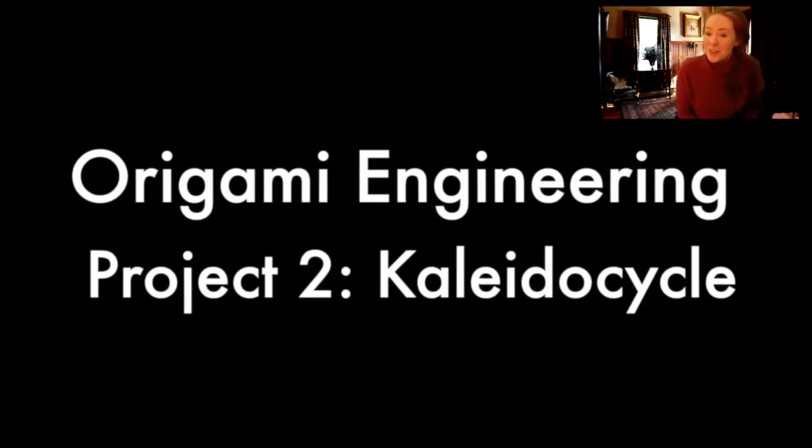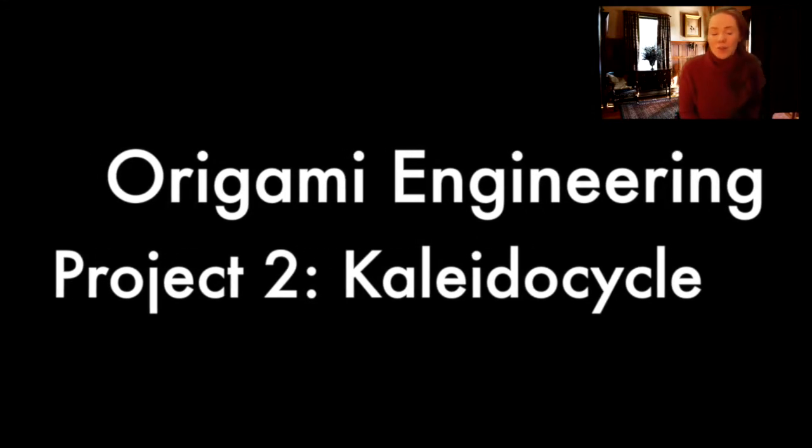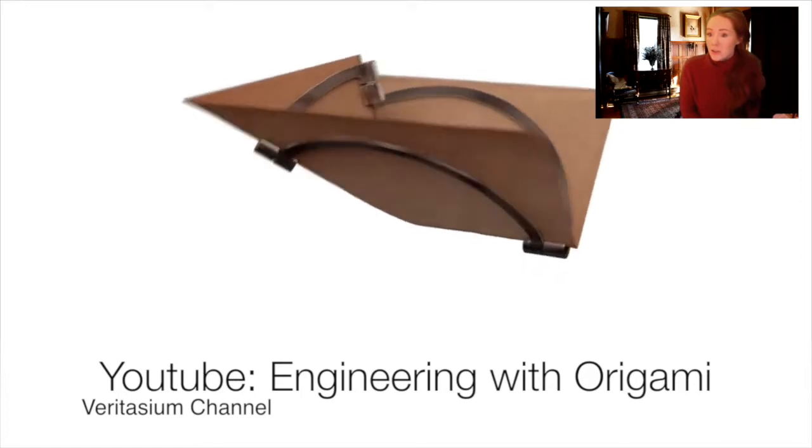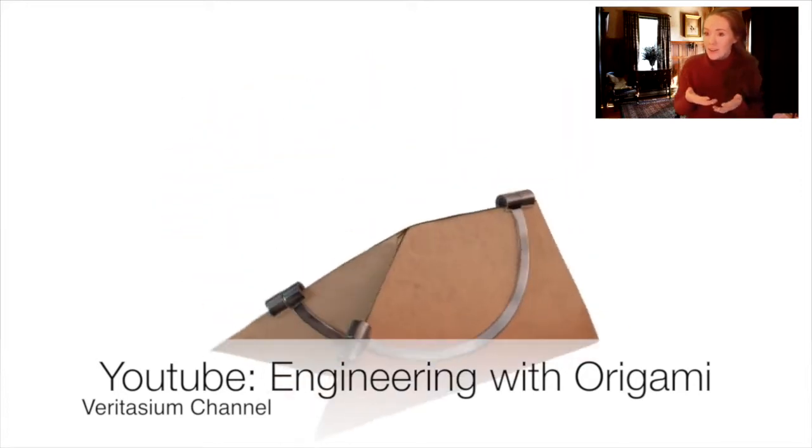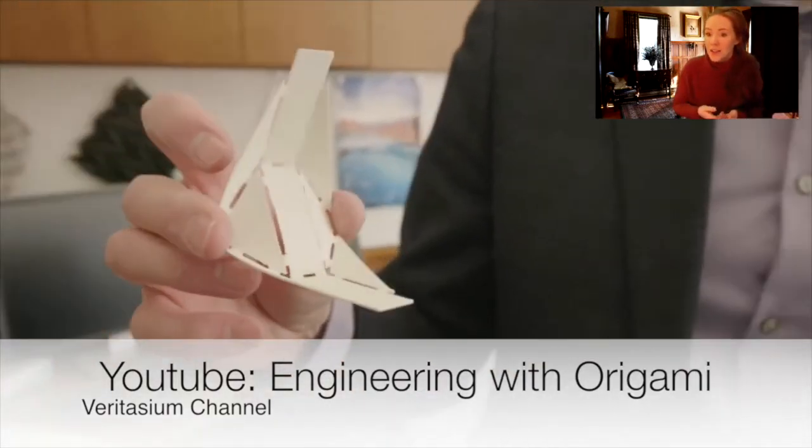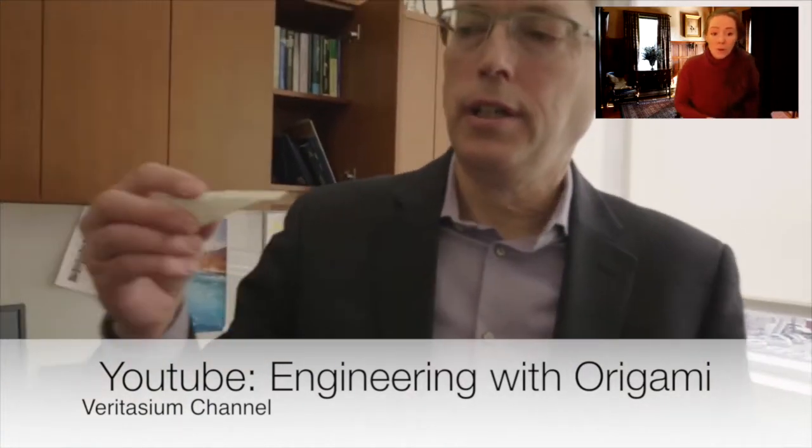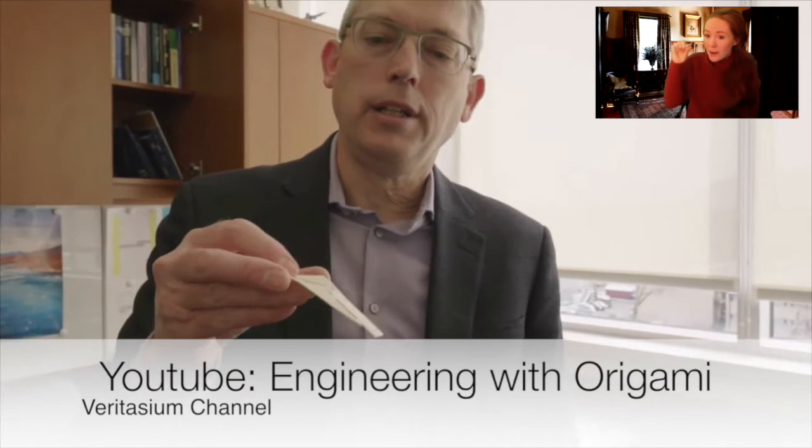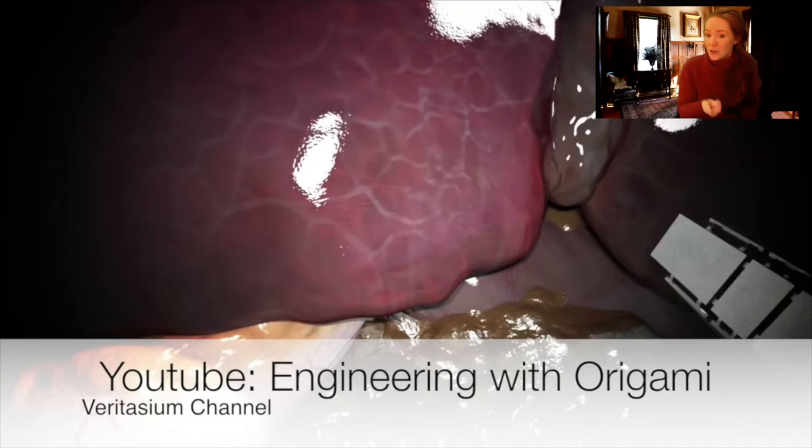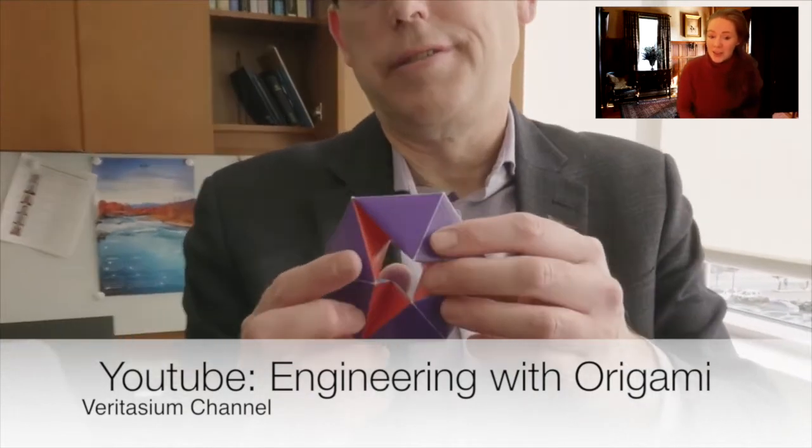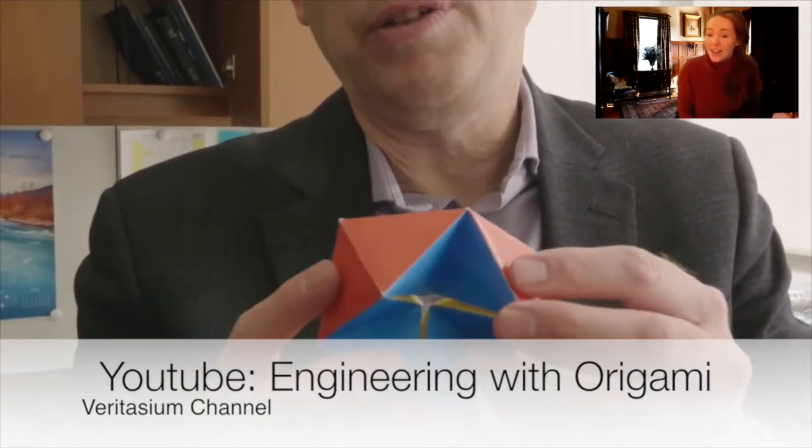Our second project is going to be the kaleidocycle. The cool thing about origami engineering is that we're allowed to take two-dimensional shapes and turn it into something that actually has a full range of motion. They use this in surgical procedures. You can see this is a foldable forceps that can enter the body flat, and then once it's inside, it can open up to actually be a really beneficial surgical tool. Another example of this is the kaleidocycle, which he's demonstrating for you and which is what we're going to be making next.